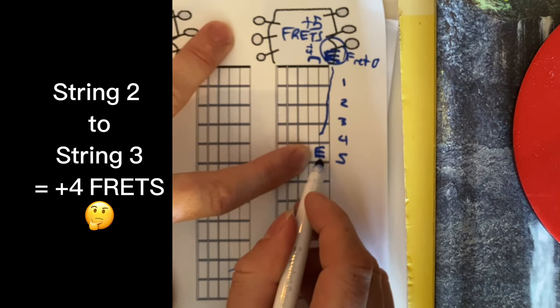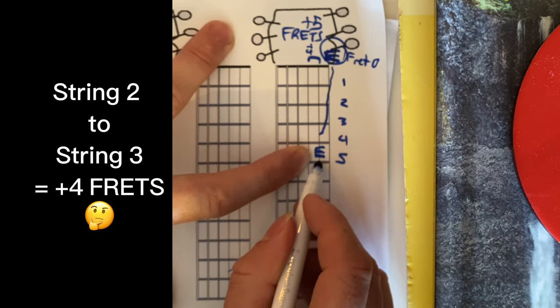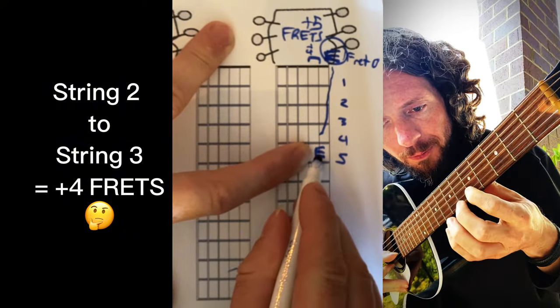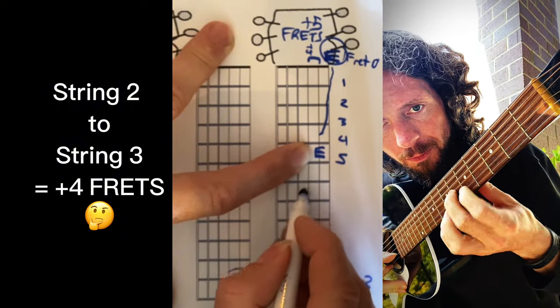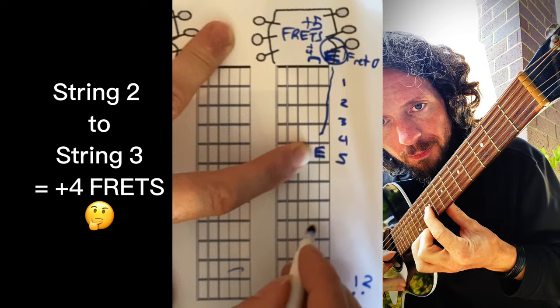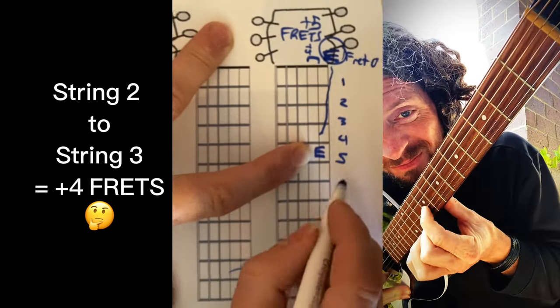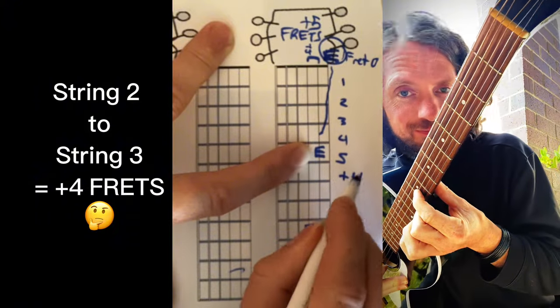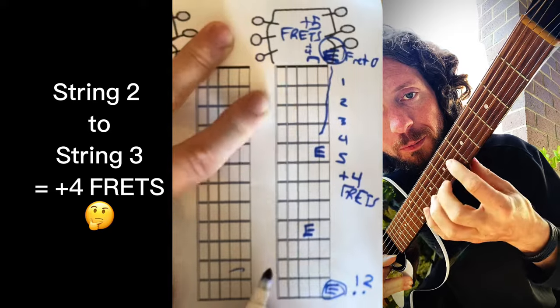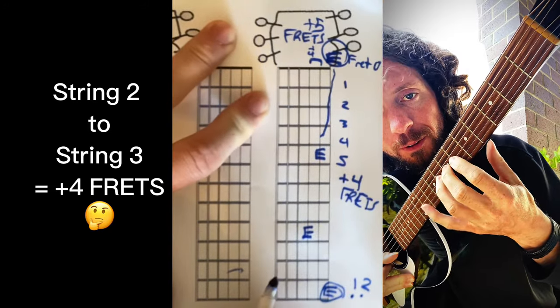So now if you're on here on E, you go to the next string plus four. One... so this would be one fret higher, two frets higher, three frets higher, four frets higher. That's also E. So what we just did there was plus four frets, so we're trying to find different patterns in here that help us find our way around the fretboard. That was plus one, plus two, plus three, plus four from E to E.